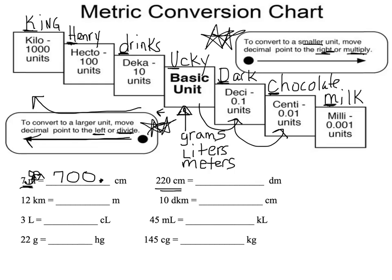Let's try another one. If I'm at 220 centimeters, so I'm at this unit here, and I need to move to decimeters. I'm going to move from centi over to deci. So I need to move my decimal point just one spot to the left. The imaginary decimal point is right here after the zero, and I'm going to move my decimal point one spot. So now that means I have 22.0 decimeters — you can just leave it as 22.